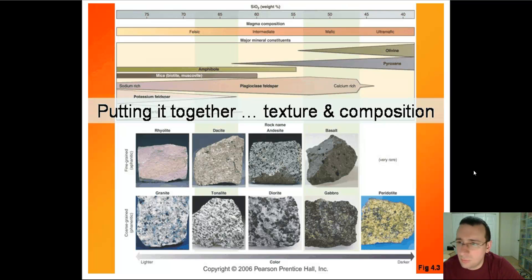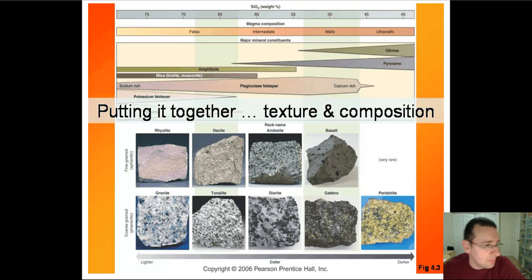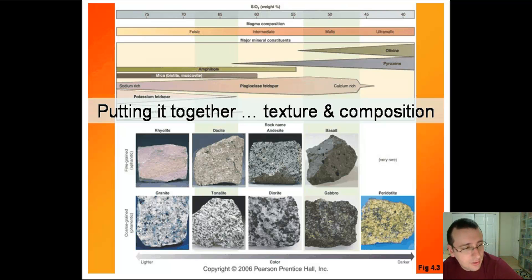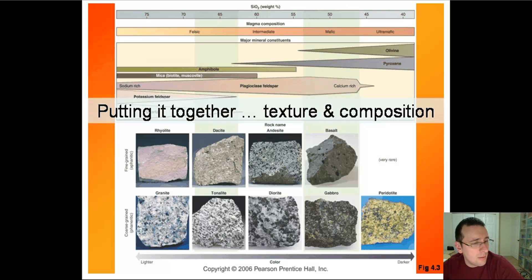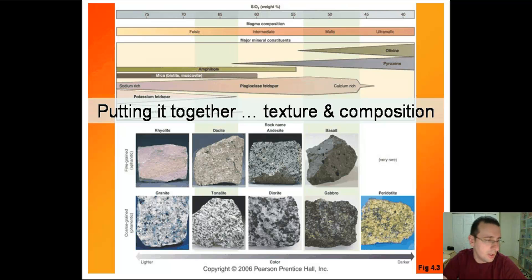Looking at the fine-grained igneous rocks: at the very felsic end you have rhyolite, then slightly less felsic is dacite, then intermediate is andesite — which is also fine-grained — and then completely fine-grained basalt at the mafic end of the spectrum. Beyond that you won't find rocks that mafic in the crust; only in the mantle will you have truly ultra-mafic rock, which is very fluid. All crustal rock has at least a little silicon in it; only mantle rocks have pure magnesium.